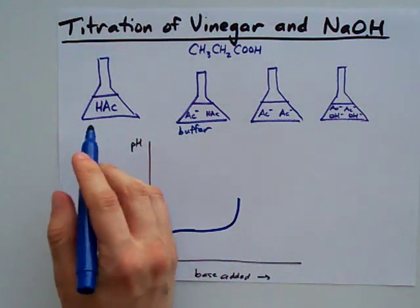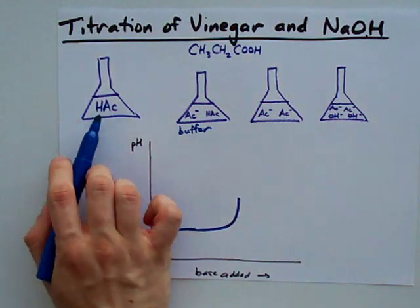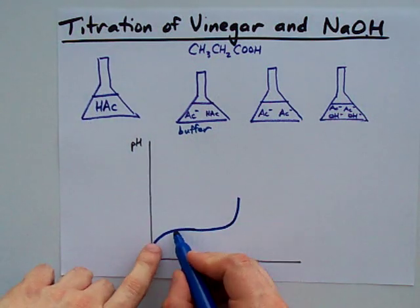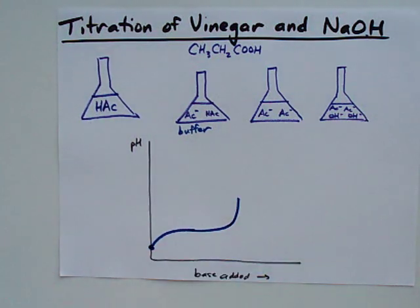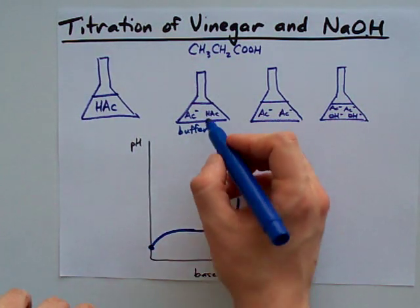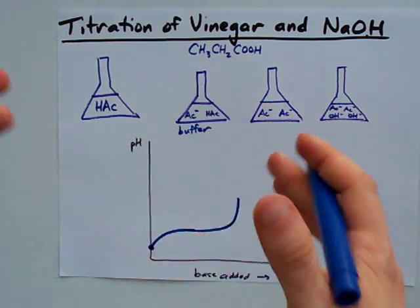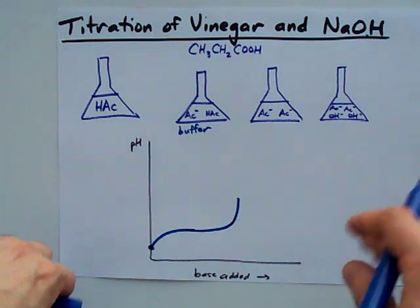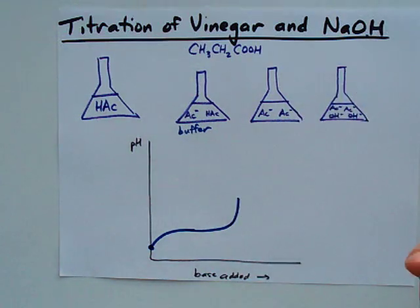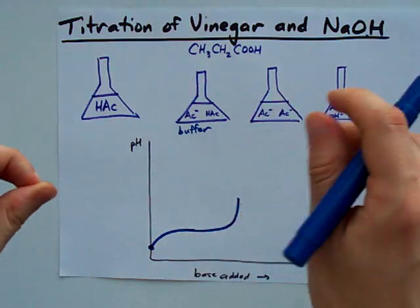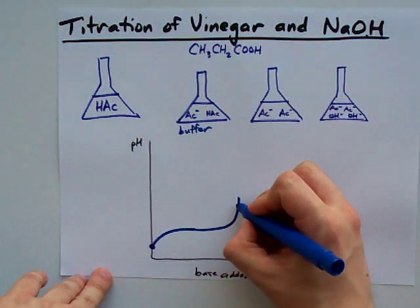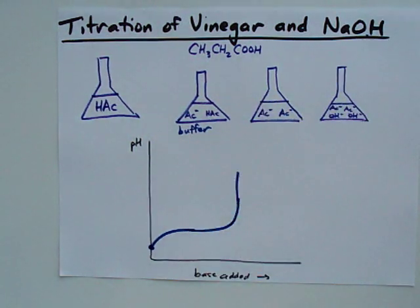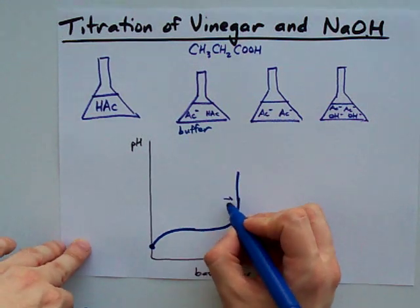Consider this: how much NaOH would it require to get rid of 90% of the HAc when you still have a lot? Quite a bit. But how much would it require once you have almost no HAc left? To get rid of 90% of that, it might take just one drop of NaOH because there's so little remaining. So you get to the equivalence point, the pH rises sharply, your phenolphthalein changes color, and you find your equivalence point.